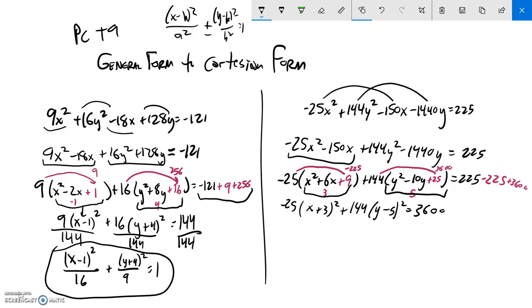And I'm getting closer, but I want it to be equal to 1. So I'm going to divide everything by 3,600. Negative 25 over 3,600 leaves me a negative 144. Or I could write this as just minus that whole thing. Plus 144 divided by 3,600 leaves me a 25 down there.